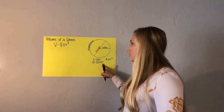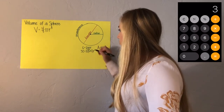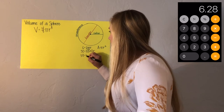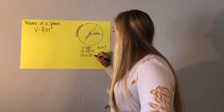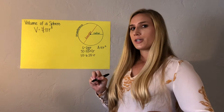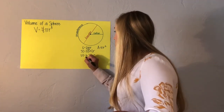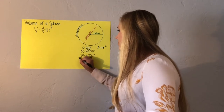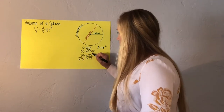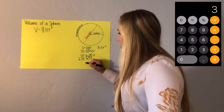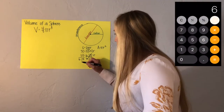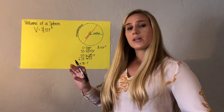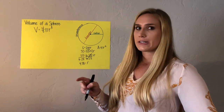So 2 times 3.14 gives me 6.28 times R. The inverse operation says to divide both sides by 6.28, which cancels out on the right side, and I have R equals 4.78. That's an approximation, but I'm going to keep two decimal places so that my final answer for the volume is fairly accurate.